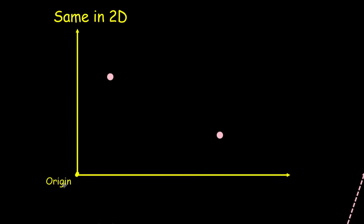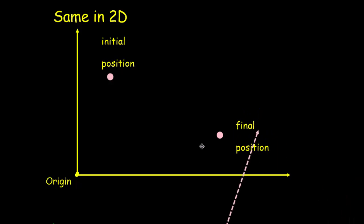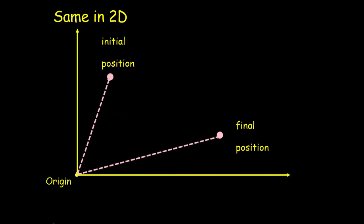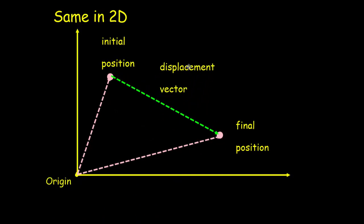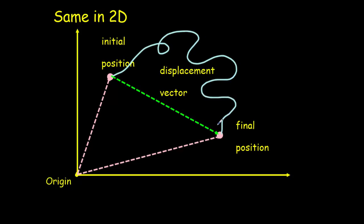It all works the same in two dimensions, or three dimensions for that matter. We start with a fixed point called our origin and place our coordinate axes on that origin. For a motion from some initial position to some final position, we can describe those positions as points in space or as vectors — an initial position vector and a final position vector. The vector that goes from the initial position to the final position is called the displacement vector. The displacement vector tells us nothing about the path taken; the distance traveled equals the length of the particular path taken.